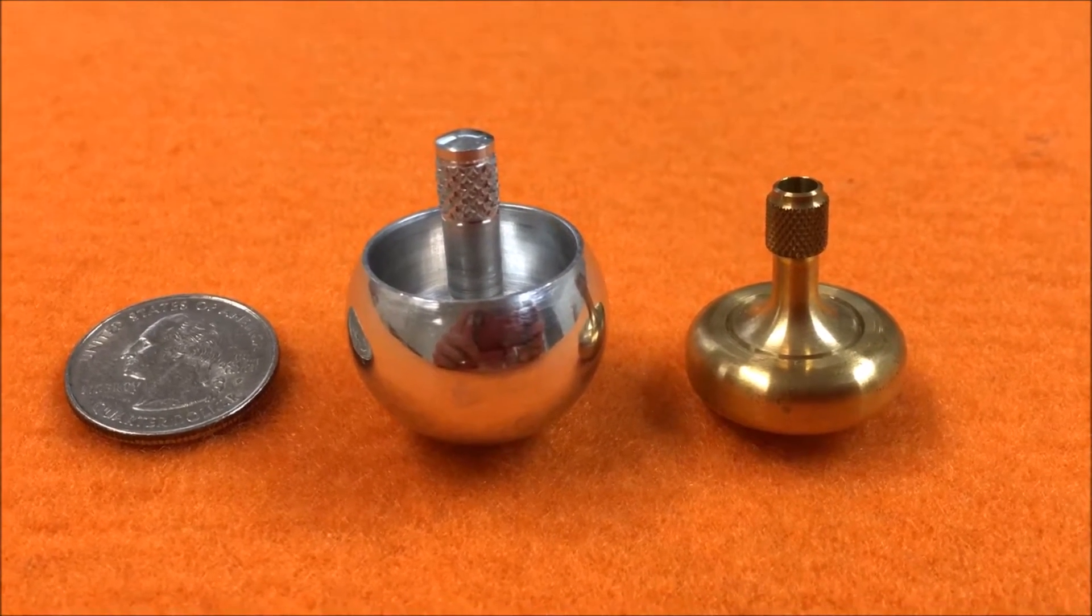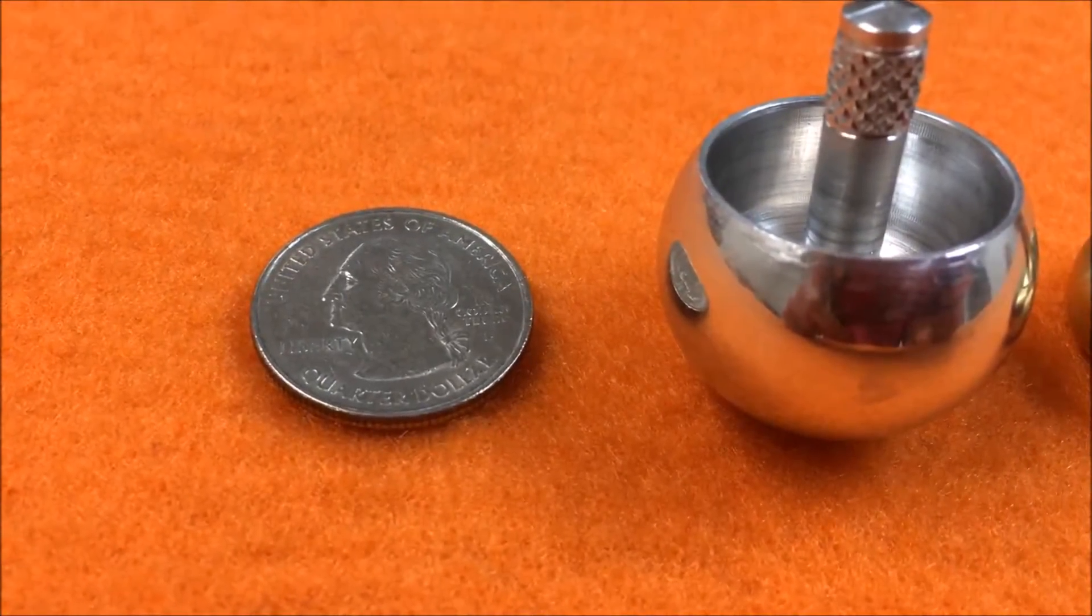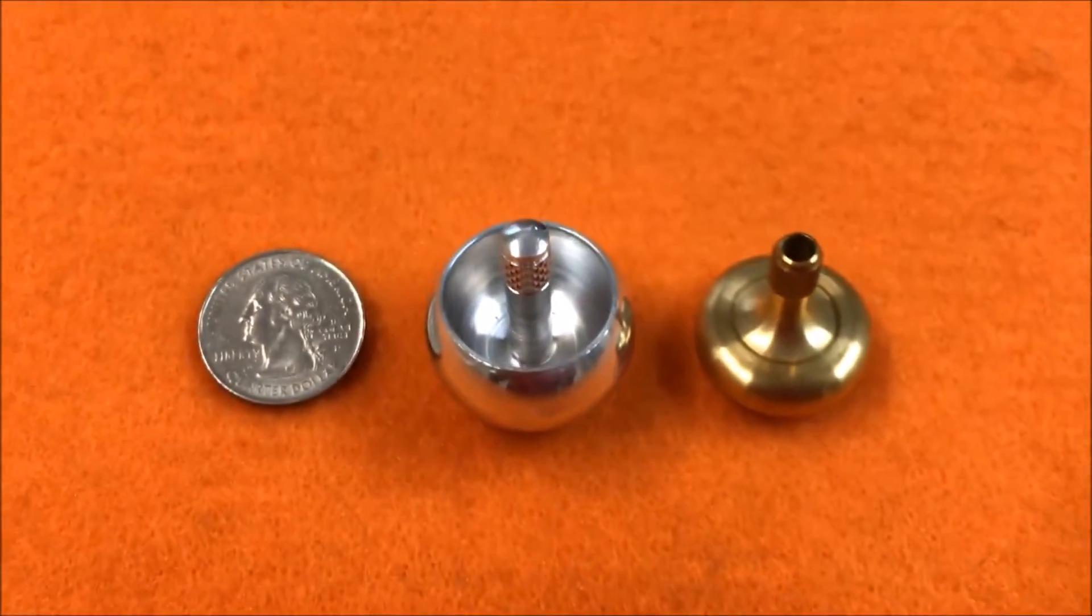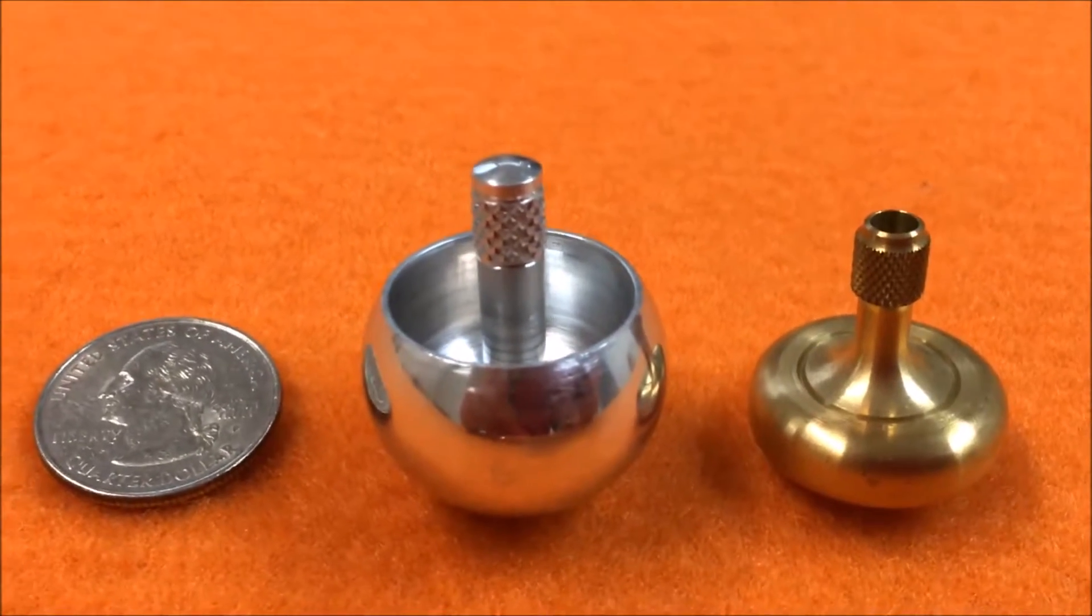Here's a quick size comparison of the tippy top of the Prometheus lambda and a regular quarter. You can see it's a pretty beefy top compared to most. I really dig it, cool top.